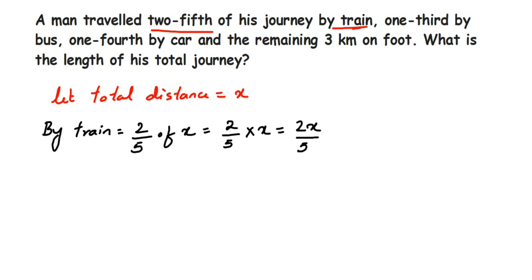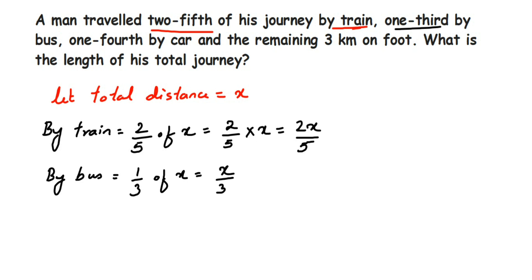We do the same for bus and car. By bus it is one-third of x, so that gives x upon three. By car it is one-fourth of x, which equals x by four. And the remaining distance is three kilometers.